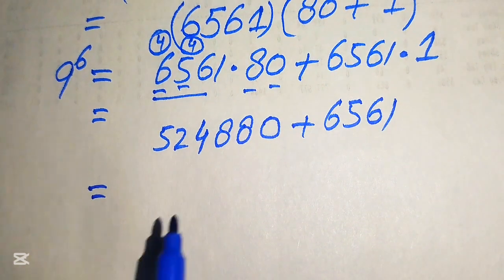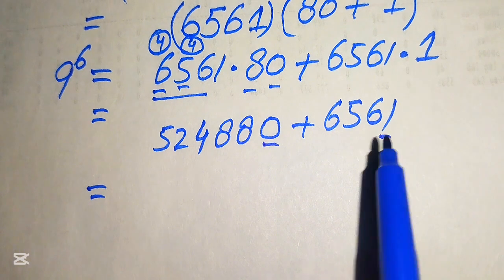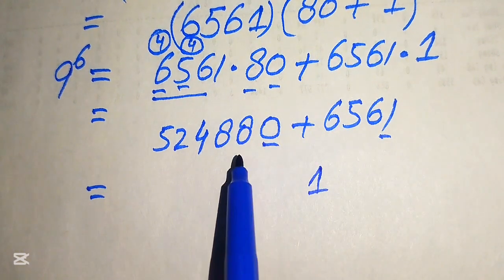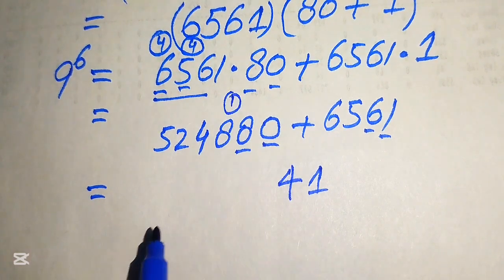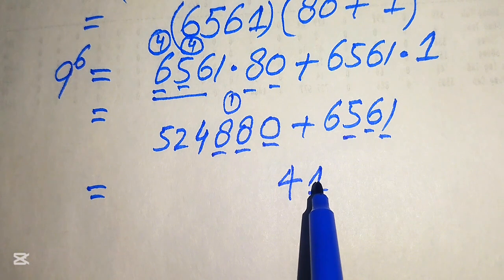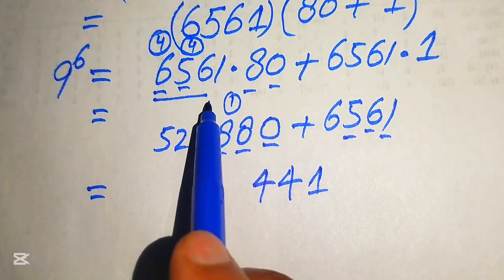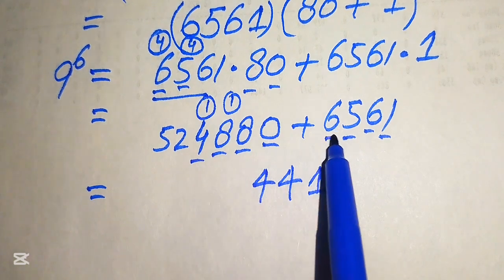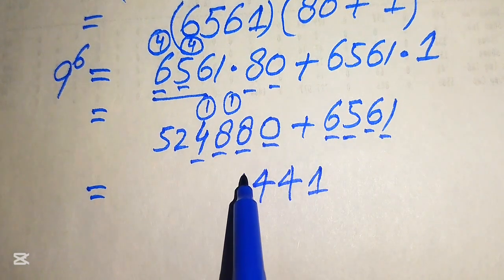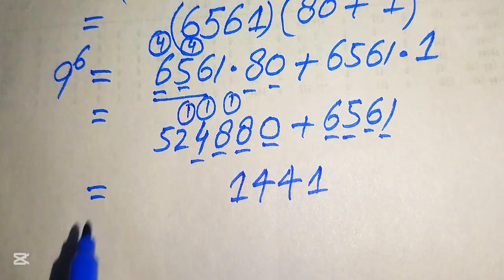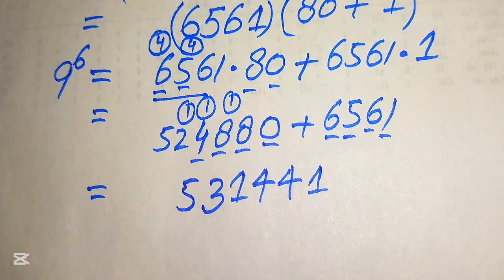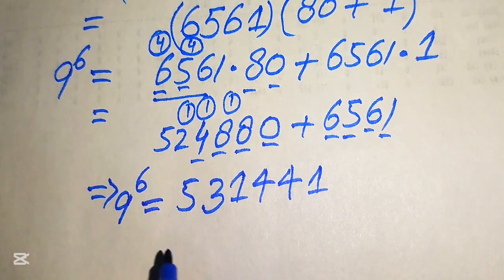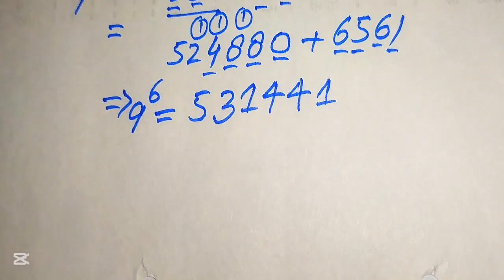Adding 524880 and 6561: 0 plus 1 is 1, 8 plus 6 becomes 14 — write 4 carry 1, 8 plus 5 becomes 13 plus 1 is 14 — write 4 carry 1, 4 plus 6 becomes 10 plus 1 is 11 — write 1 carry 1, 2 plus 1 is 3, and this is 5. So 9 to the power of 6 equals 531441.